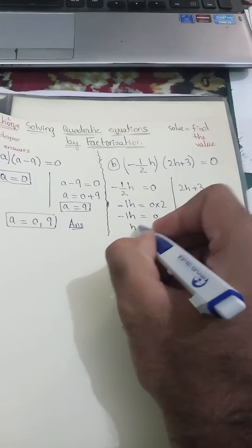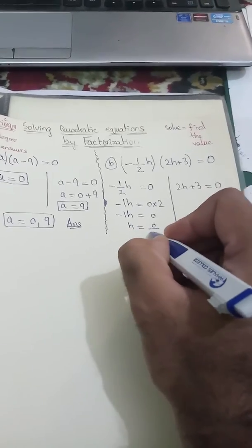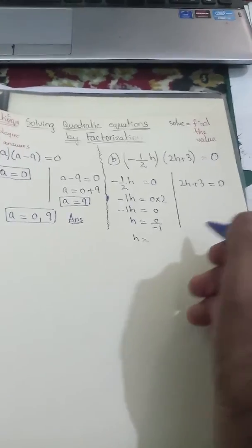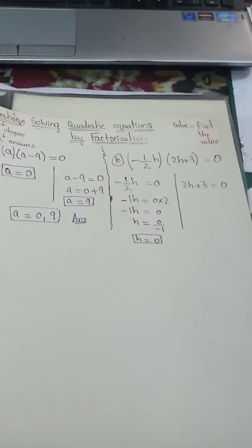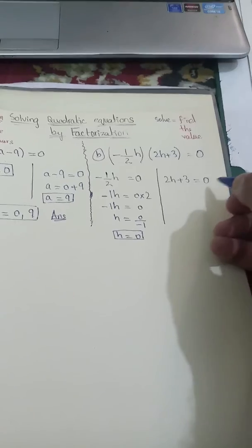When it moves on the other side it will be divided, and anything which is divided by 0 is always 0. The first value of h is 0. And this time we have 2h + 3.